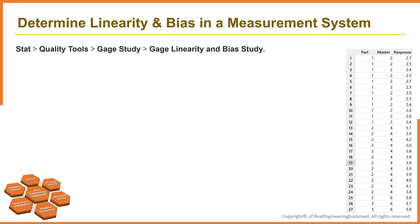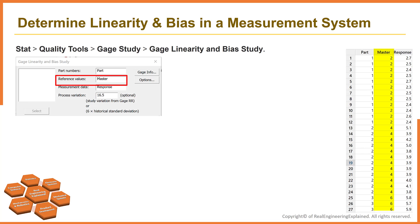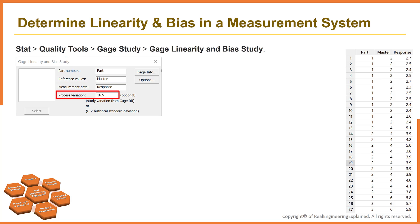To do this analysis in Minitab, go to Stat, then Quality Tools, then Gauge Study, and then Gauge Linearity and Bias Study. In Part Numbers, enter the column that contains the part names. In Reference Values, enter the column that contains the reference values for each part. In Measurement Data, enter the column that contains the observed measurements. In Process Variation, enter a value that represents 6 times the process standard deviation if you have it. You can also enter the process standard deviation from the total variation row of study variation.